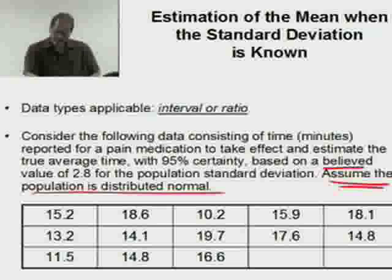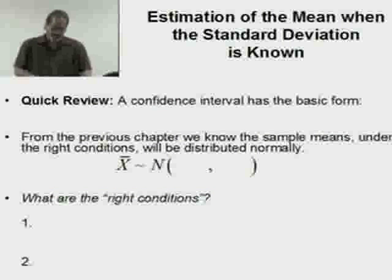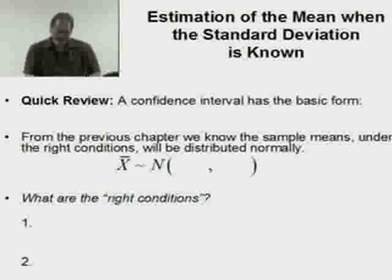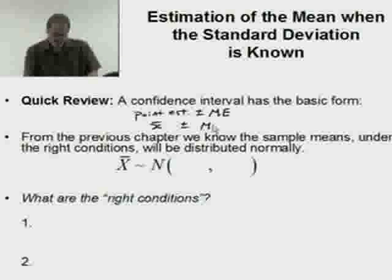As a quick review, a confidence interval will have the basic form of point estimate plus or minus the margin of error. Our point estimate for the mean will be x-bar plus or minus the margin of error. From previous discussions, we know that the sample means, under the right conditions, will be distributed normally with parameters mu and variance sigma squared divided by n.